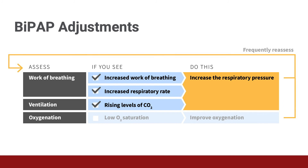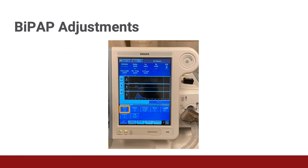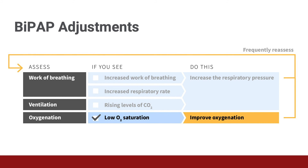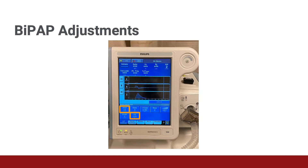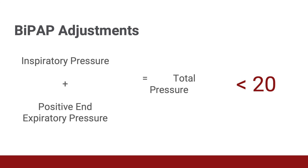Ventilation should be assessed first. If a patient has increased work of breathing, increased respiratory rate, or rising carbon dioxide levels, increase the inspiratory pressure, titrating by 2 to 3 centimeters of water and reassessing. If the patient has normal work of breathing and carbon dioxide levels but low oxygen saturation, improve oxygenation by increasing the oxygen concentration or positive end expiratory pressure — preferably the oxygen concentration first, as higher positive end expiratory pressure increases the risk of lung damage. The total pressure — inspiratory pressure plus positive end expiratory pressure — should not exceed 20 centimeters of water, as aspiration risk increases above this level.